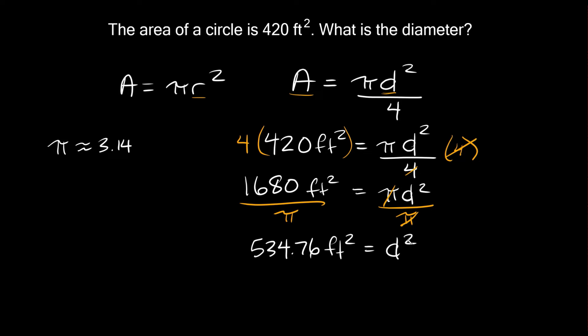To solve for d we need to get rid of this exponent 2 by taking the square root of both sides. On this side the square root and squared exponent cancel each other out, leaving just d. On this side we take the square root of 534.76, which equals approximately 23.12 feet. That's equal to d, the diameter, and that makes sense because the diameter is a length, not an area, so our units are linear.